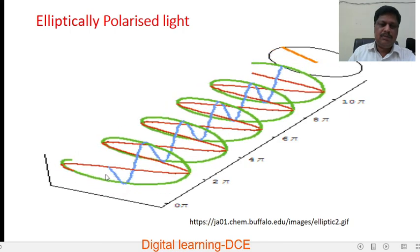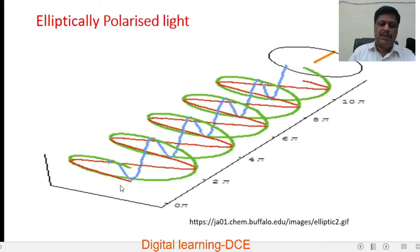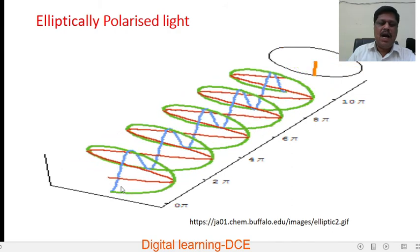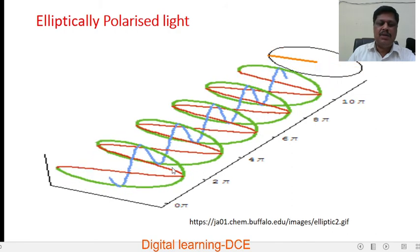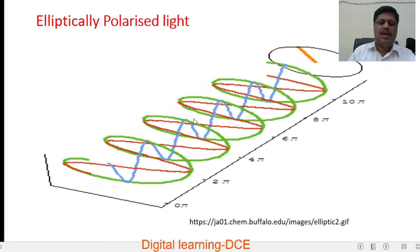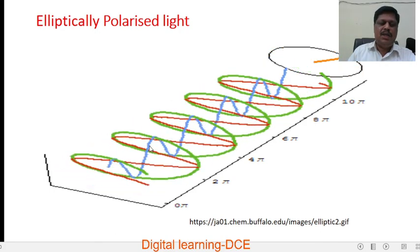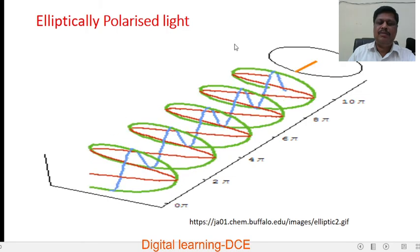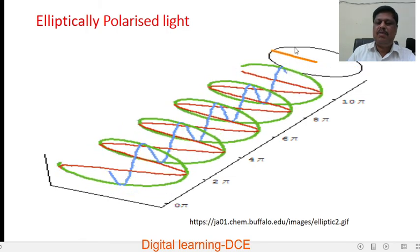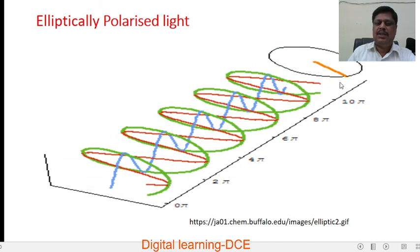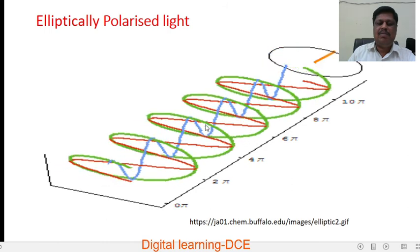The animated picture of elliptically polarized light shows two waves: a blue colored wave and a red colored wave, where the red colored wave has a larger amplitude than the blue colored wave. The superposition of these two waves gives rise to a green colored resultant wave whose tip traces an ellipse. This is how elliptically polarized light is produced.